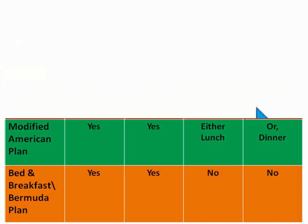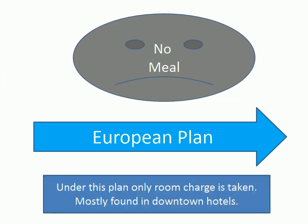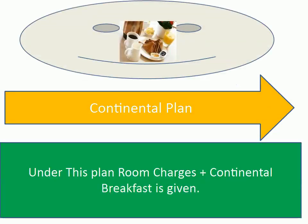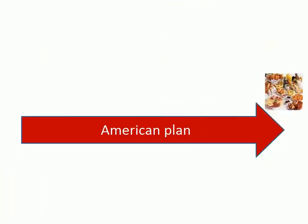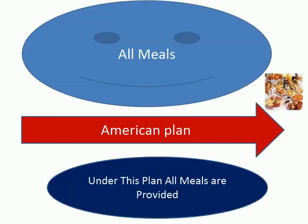European Plan — No meal. Under this plan, only the room charge is taken. Mostly found in downtown hotels. Continental Plan — Under this plan, room charges plus continental breakfast is given.